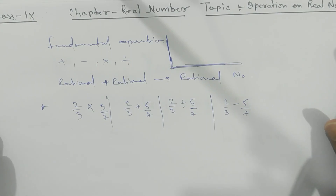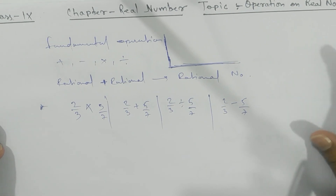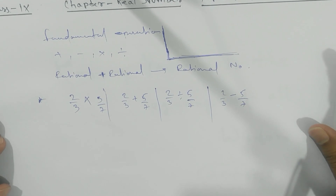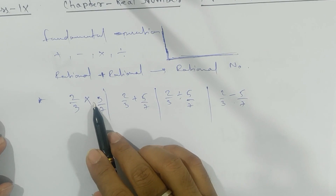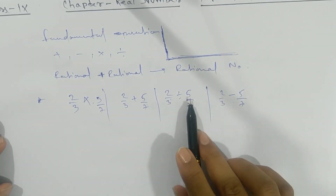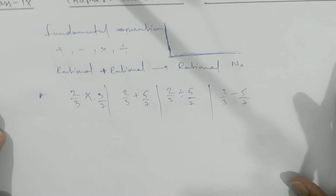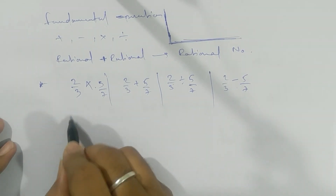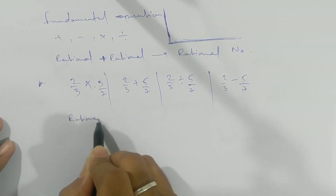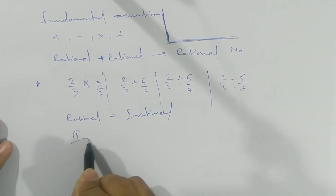Namaste students. Today's topic is operations on real numbers. We have four fundamental operations: addition, subtraction, multiplication, and division. In junior classes we have seen rational plus rational, rational minus rational, rational into rational, rational divided by rational — these four fundamental operations on rationals. Today's topic will be on rational plus irrational and irrational plus irrational.